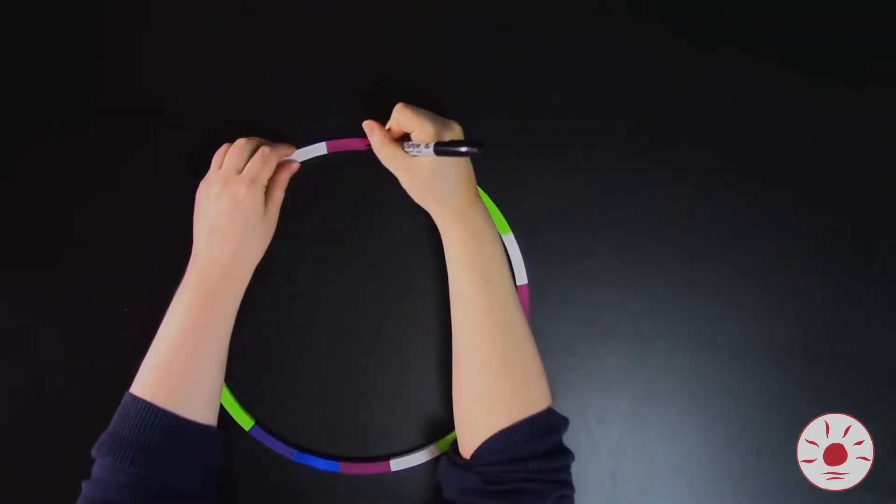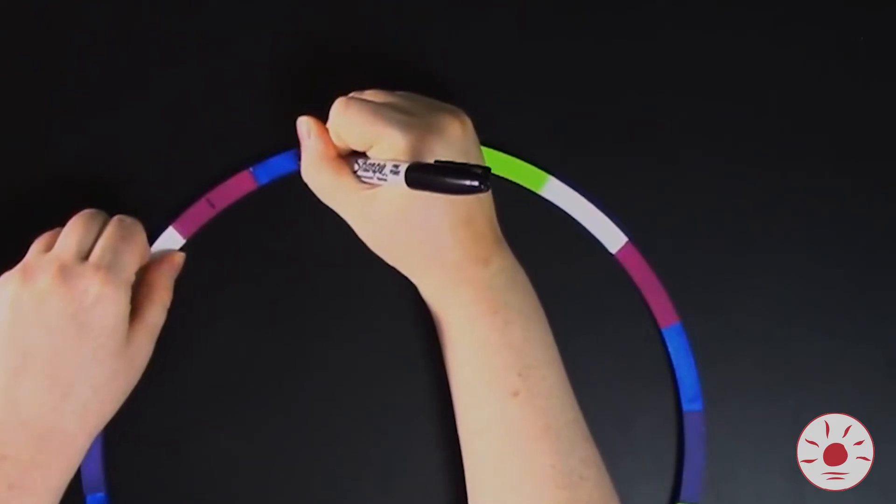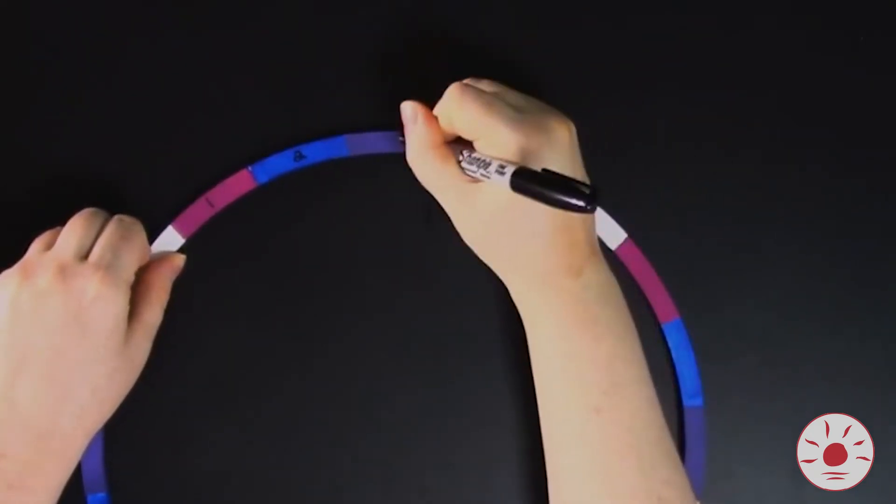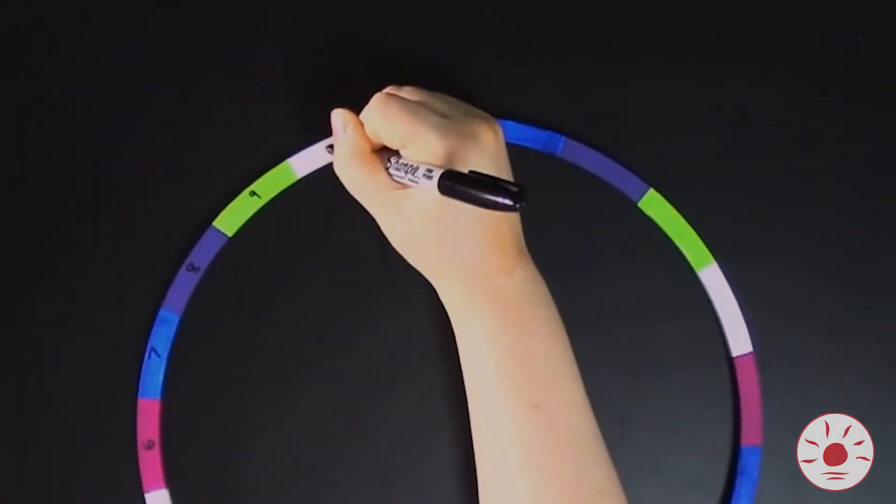Once the paint dries, number the sections 1 to 20 with a marker. Permanent markers work best for this, so you may need an adult's help. Alternatively, you could use numbered stickers instead.